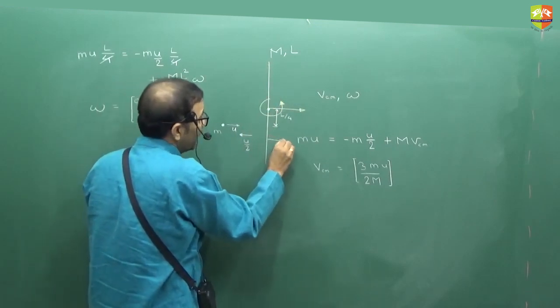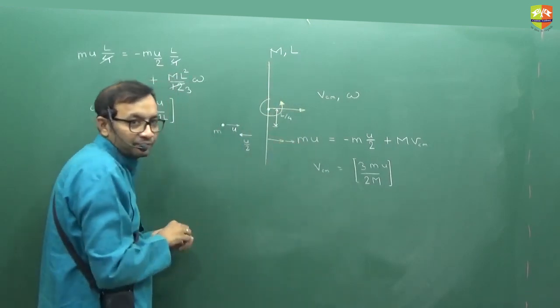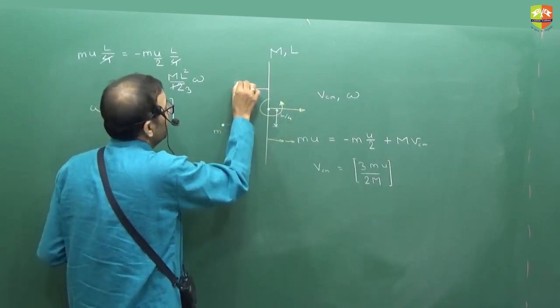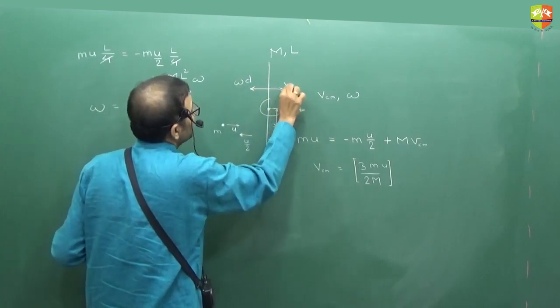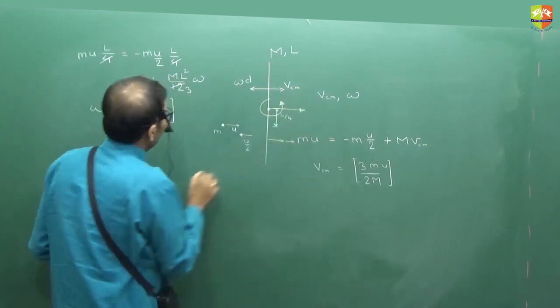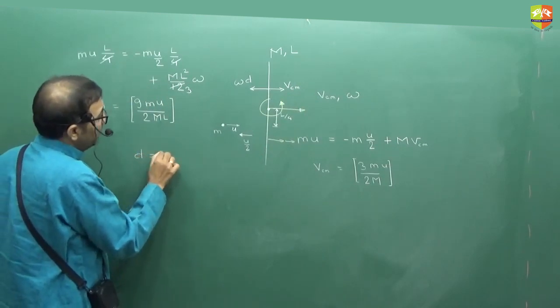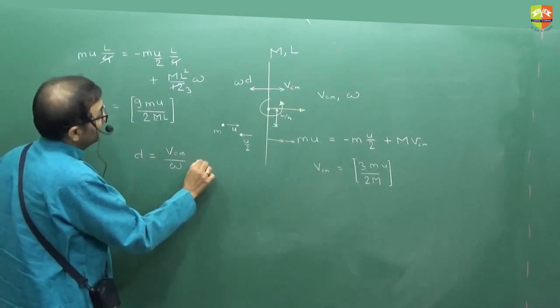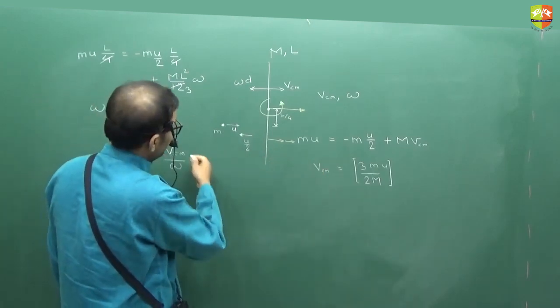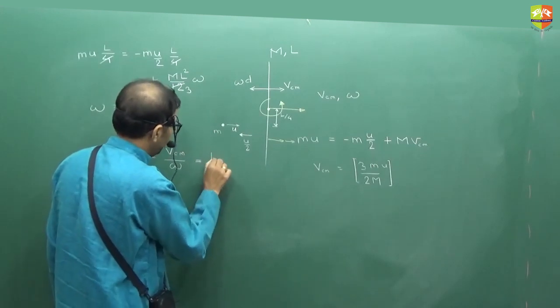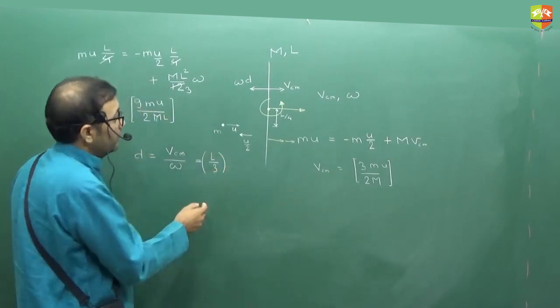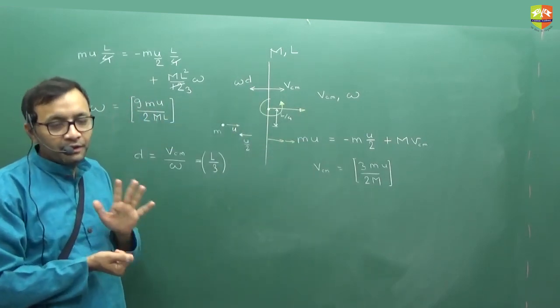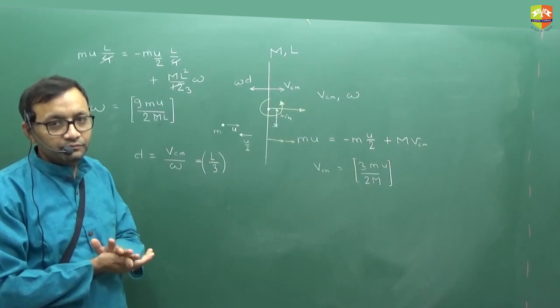Below what will happen? Omega into l is also this way and v is also this way. So is it L by 3 above? Let's see. Omega into d this way the velocity and this way it will be VCM. So total velocity will be VCM minus omega d. So d will be VCM by omega. So it will come out to be L by 3. So at a distance L by 3 from the center above, that point will be at rest immediately after collision.